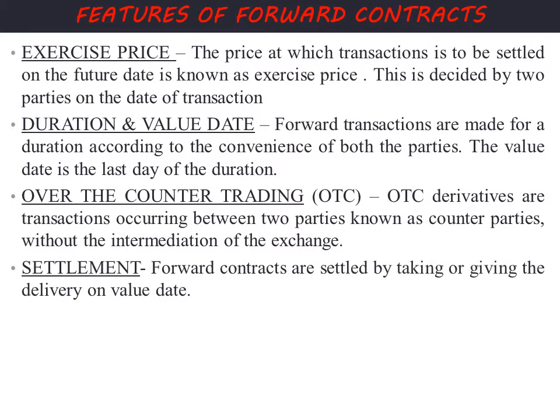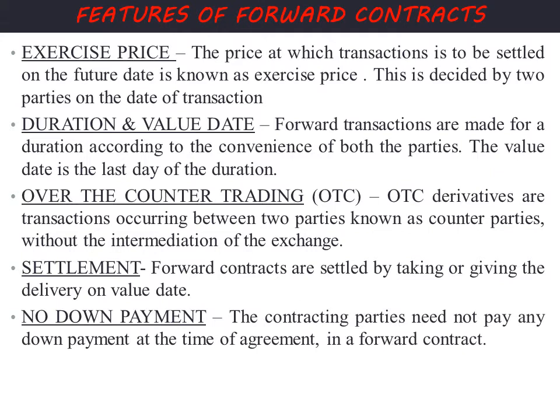Next is settlement. Forward contracts are settled by taking or giving delivery on the value date, with the agreed quantity of the asset exchanged. There is no down payment required. The contracting parties need not pay any initial payment at the time of the agreement; payment only occurs on the value date.